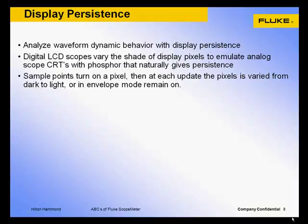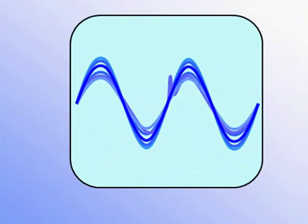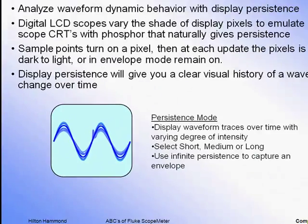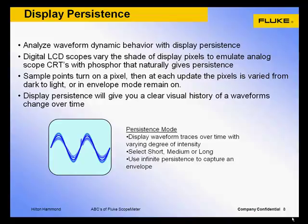Capturing disturbances or analyzing the behavior of dynamic waveforms is especially difficult without a way of seeing waveform dynamic change over time. Modern digital storage oscilloscopes with liquid crystal displays emulate the persistence of analog cathode ray tubes, otherwise known as CRTs. These CRTs have a coating of phosphor that naturally glows for a short period of time, giving the appearance of persistence. The digital scope uses a pixel shading algorithm to emulate persistence. Whenever a waveform sample point activates a display pixel, the persistence algorithm keeps the pixel active but varies each shade over time at each display update — changing from dark to light, eventually fading away. The degree of persistence can be varied from short, medium, long, or to infinite, which is essentially an envelope capture mode.